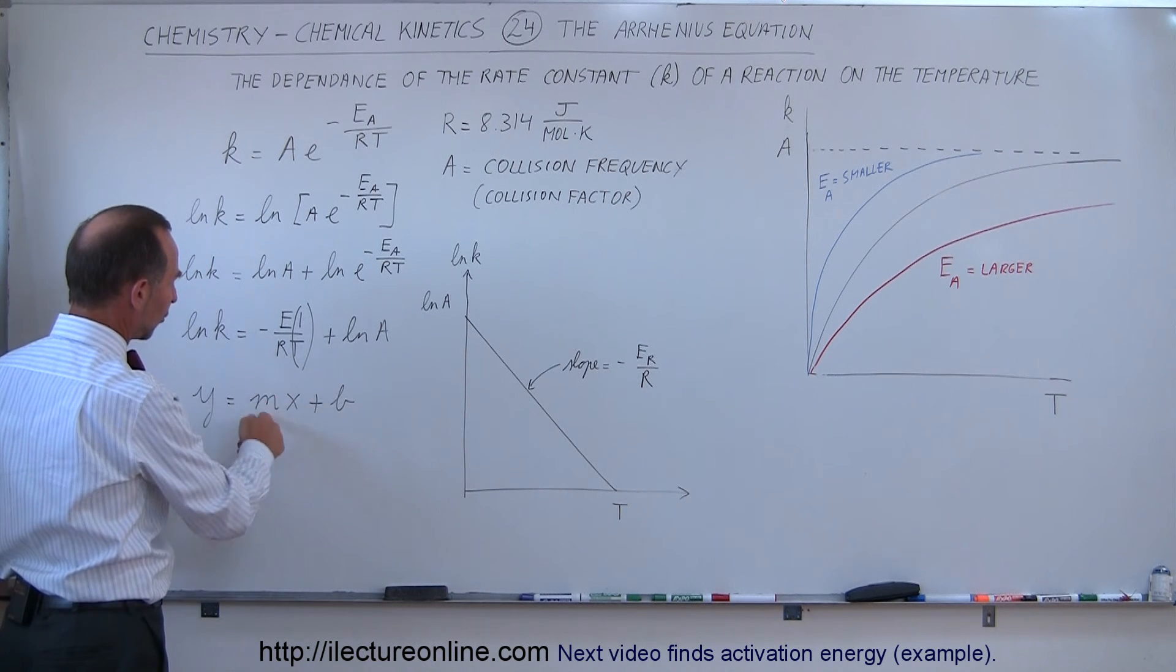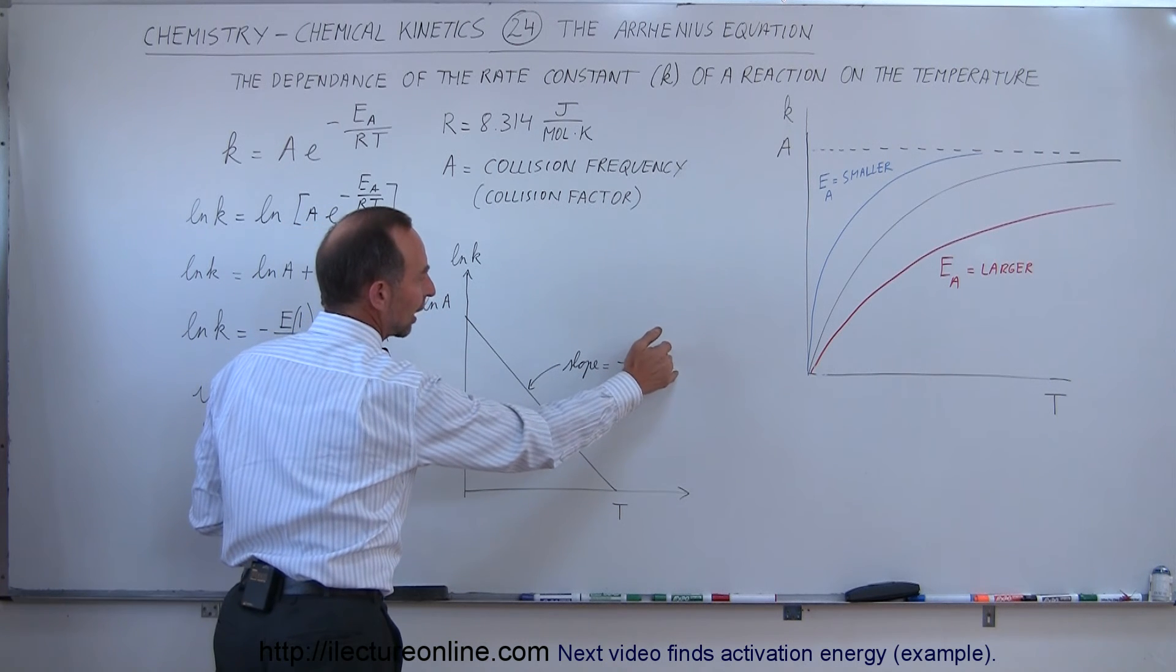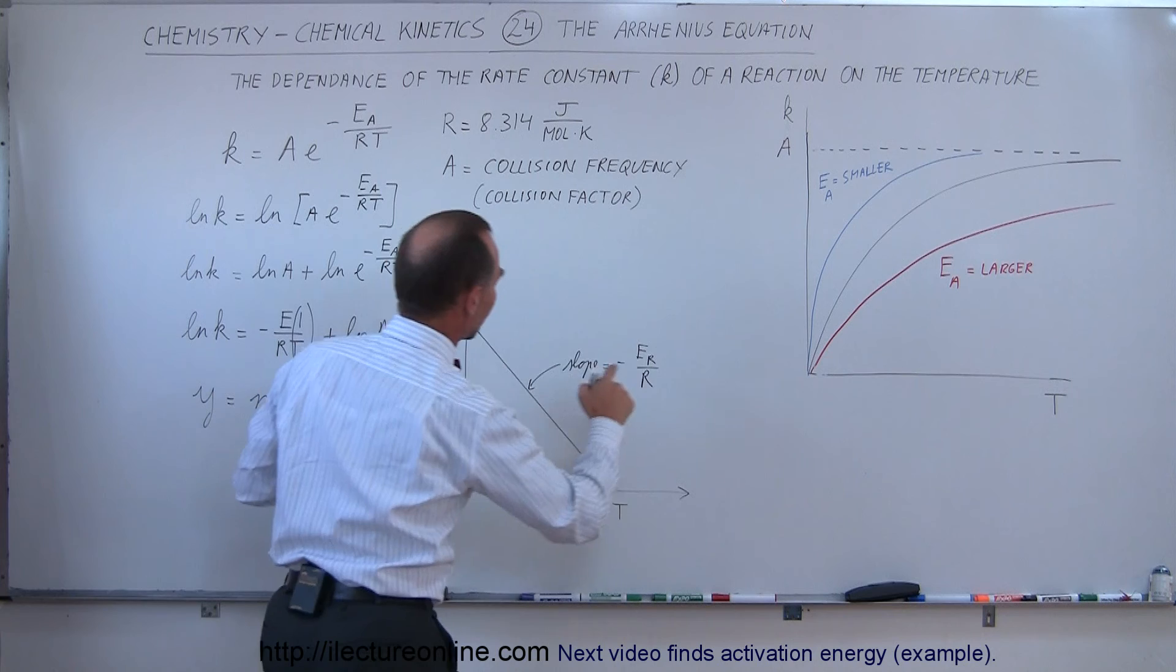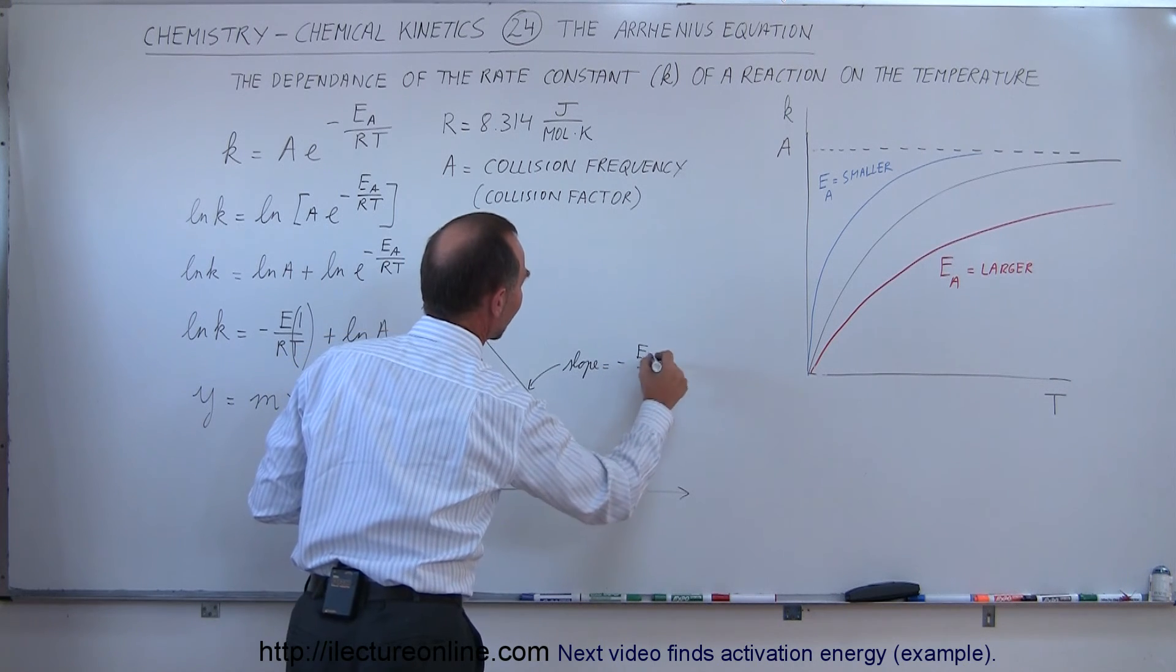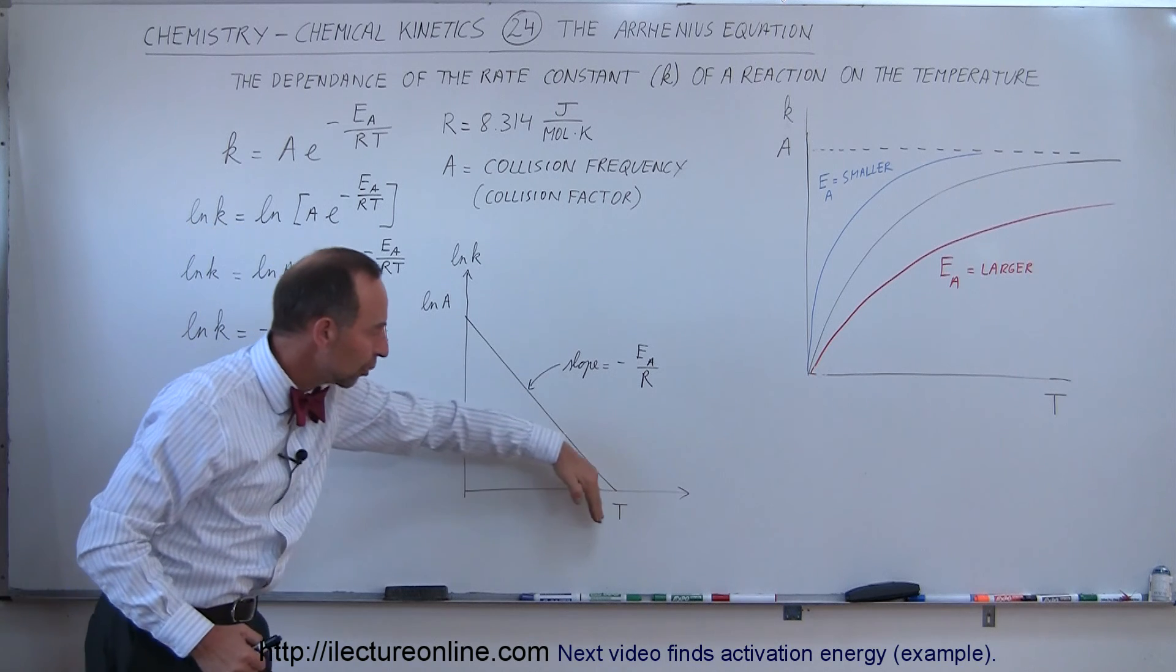Notice that the slope is negative, the slope is minus Ea over R, that's minus the activation energy divided by R, and I don't know why I wrote sub r here, that should be sub a, activation energy, and it's negative.